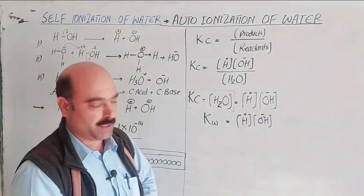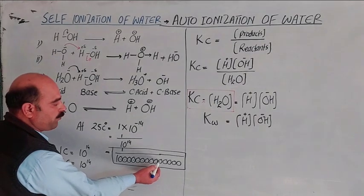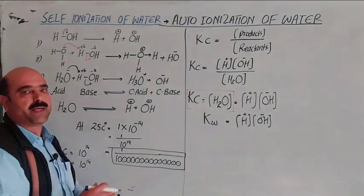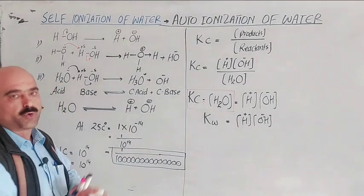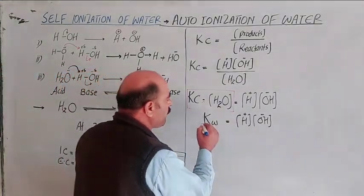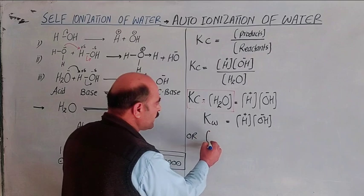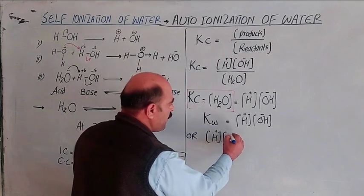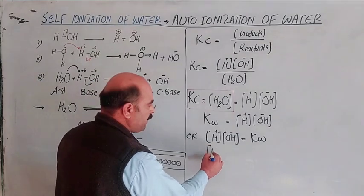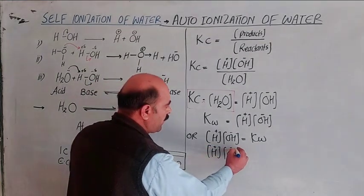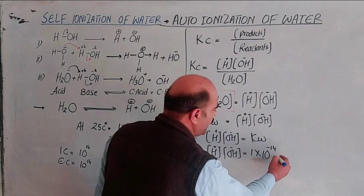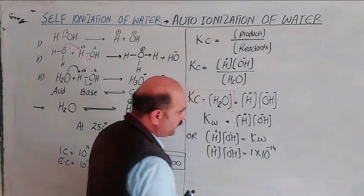At higher temperature, more molecules ionize. For 25 degrees Celsius, out of 10 raised to the power 14 water molecules, only one is ionized. The concentration of hydrogen ion times the concentration of hydroxide ion equals Kw equals 1 × 10⁻¹⁴ moles per decimetre cube squared, at 25°C.